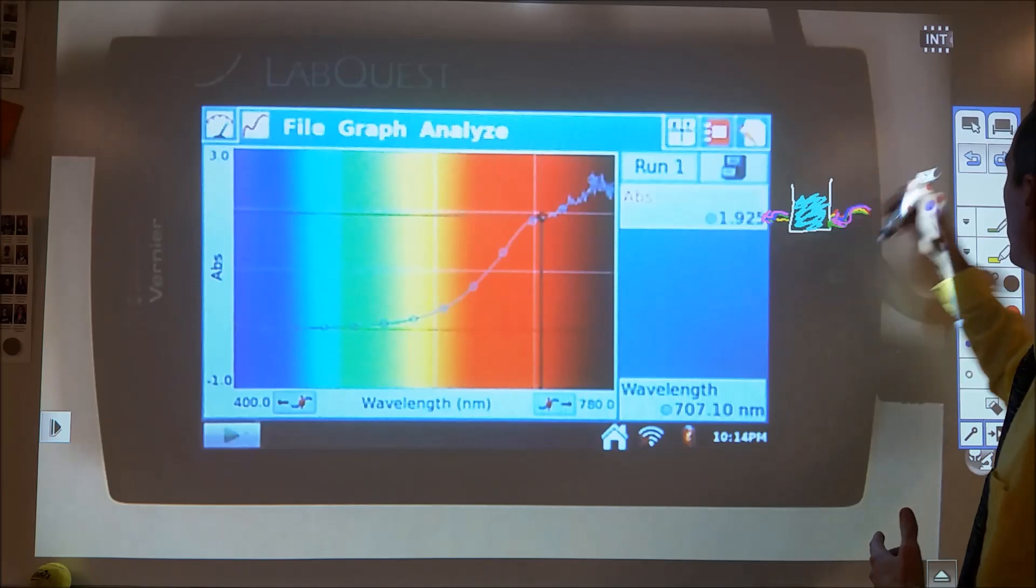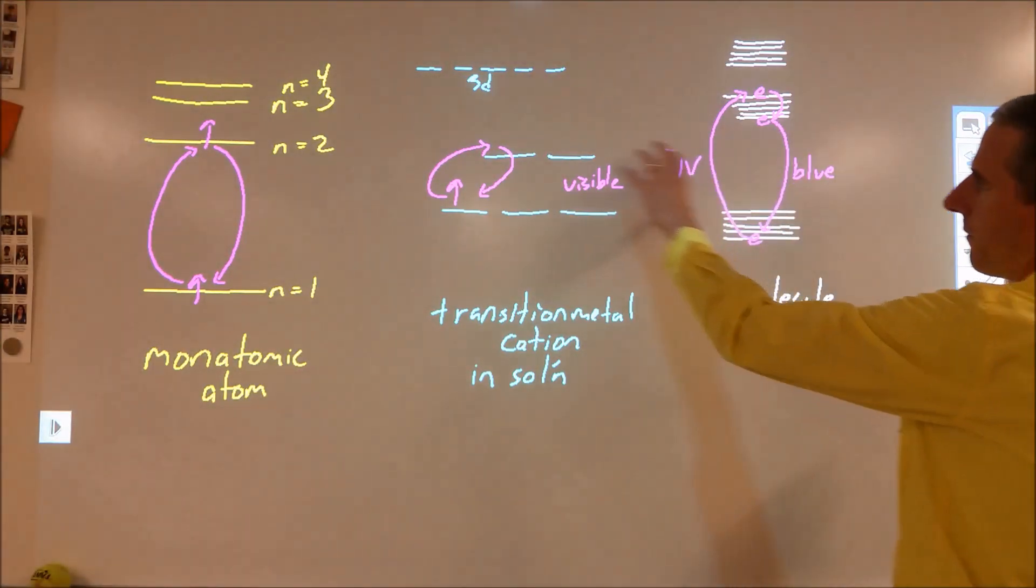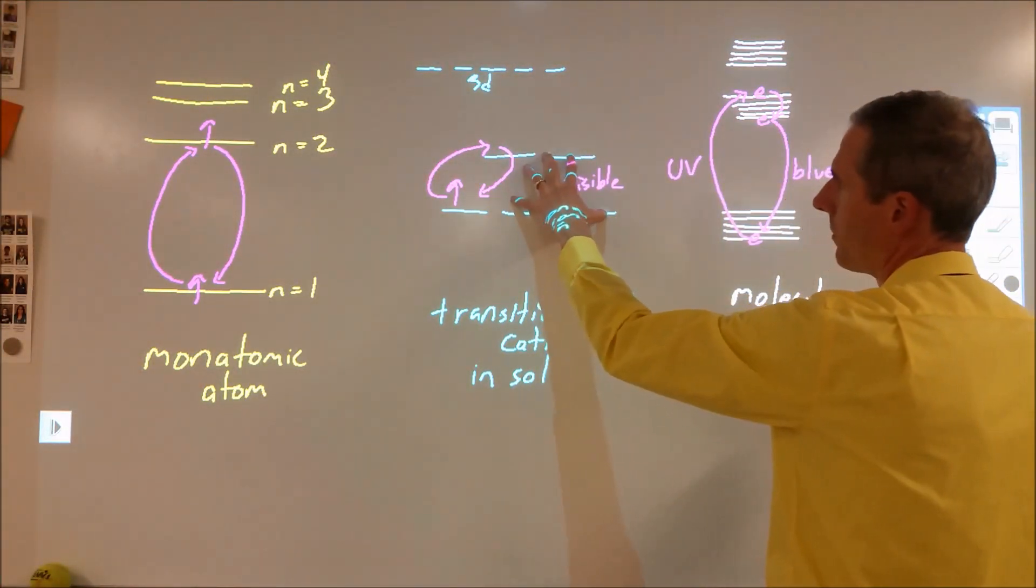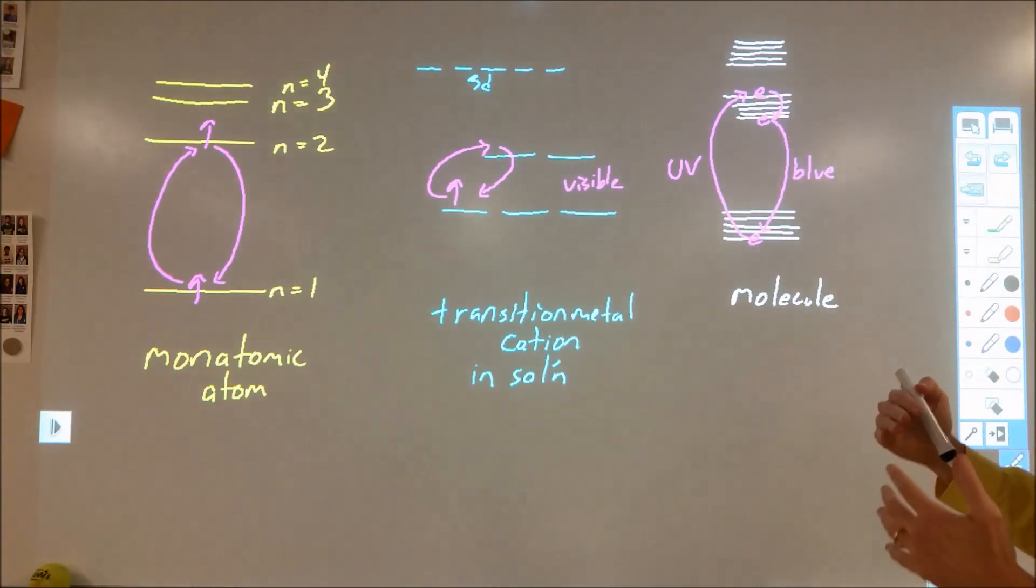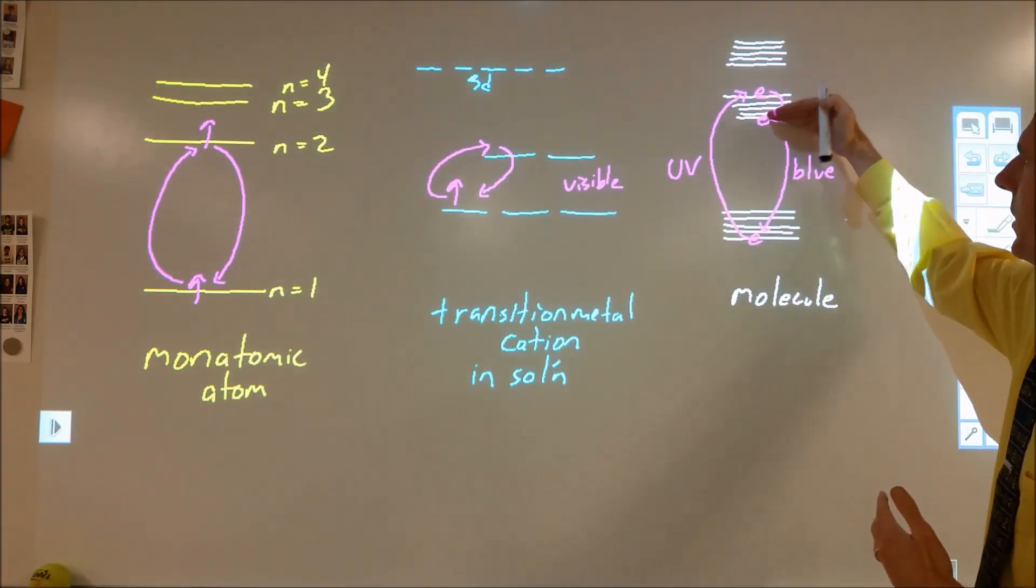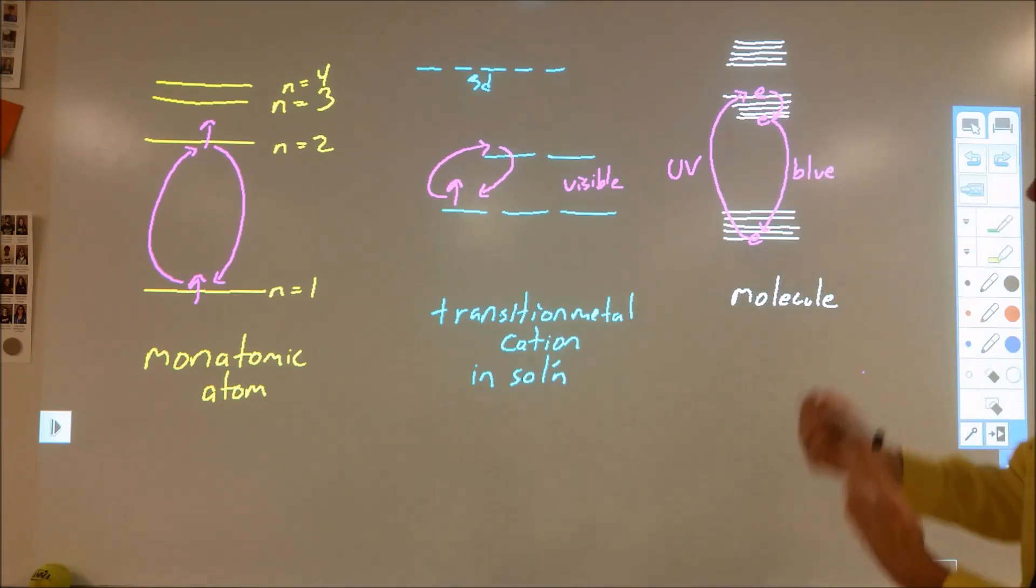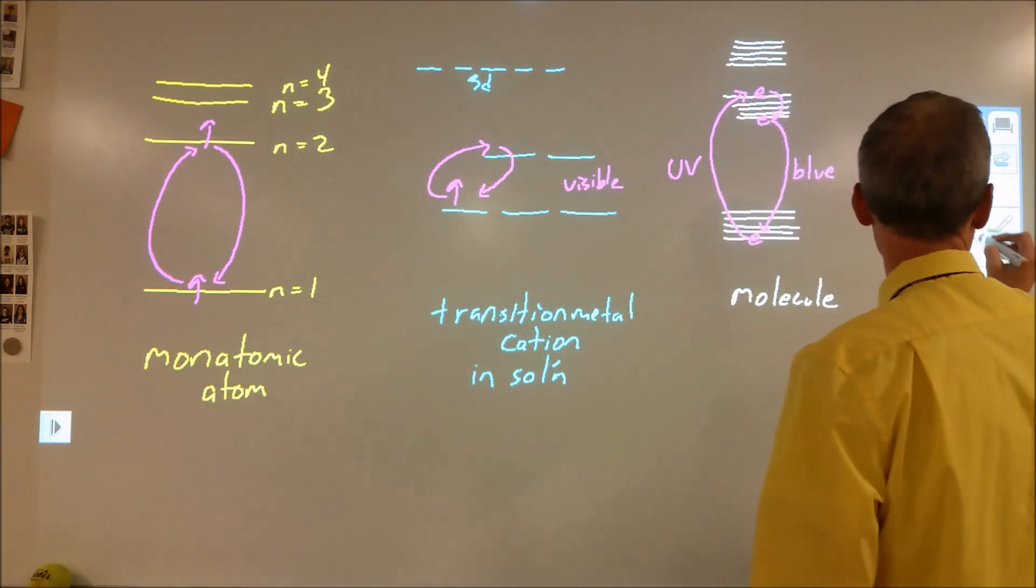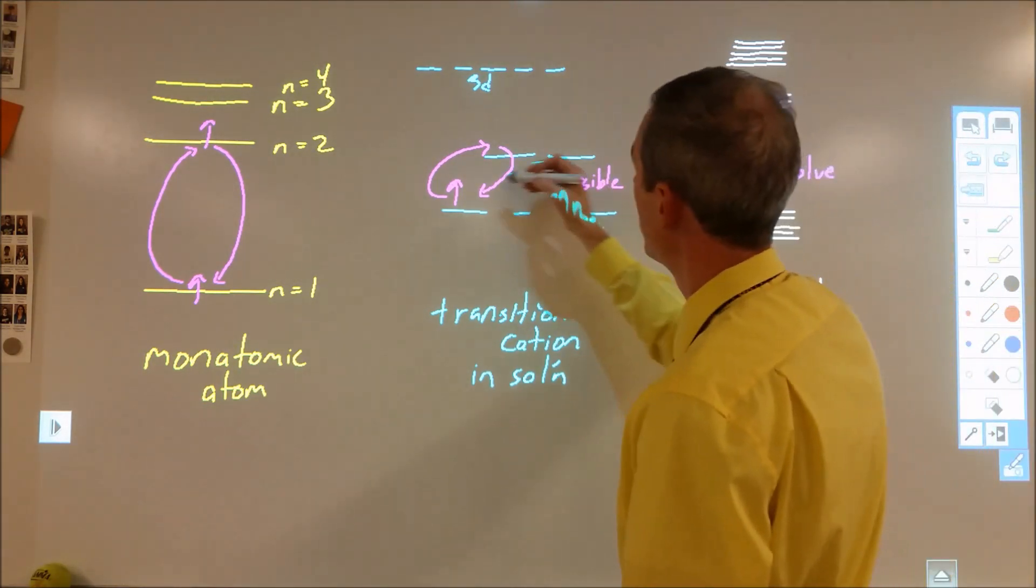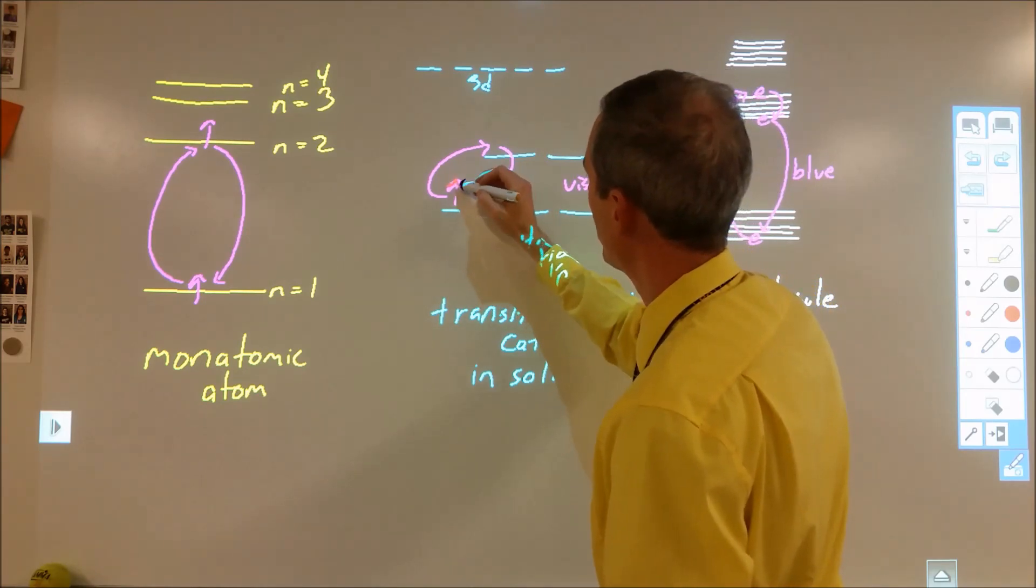But I don't really know how this factors in, in terms of making those different things change in a way where I can have another color light that I'm not seeing be re-emitted. In other words, let's get into the specifics. When I'm seeing red light being absorbed and this electron change from here to here and that red light is absorbed...